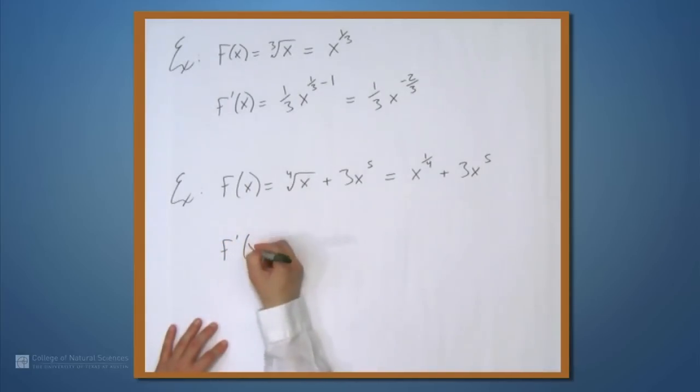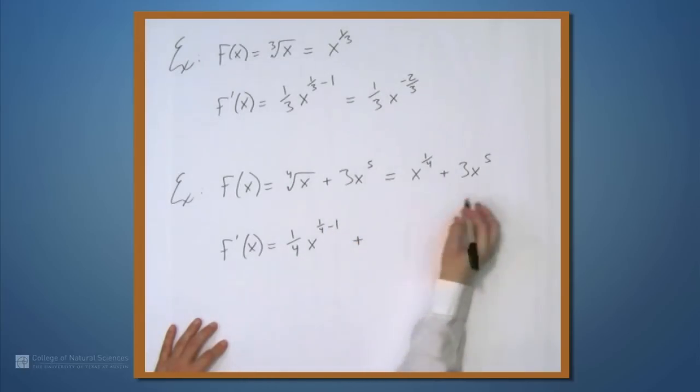That means that f'(x) is 1 fourth times x to the 1 fourth minus 1 plus 3 times the derivative of x to the 5th. The 5 comes down, multiplies by the 3, and we get 15 times x to the 5 minus 1, which is x to the 4th. So f' is 1 fourth x to the negative 3 fourths plus 15x to the 4th.